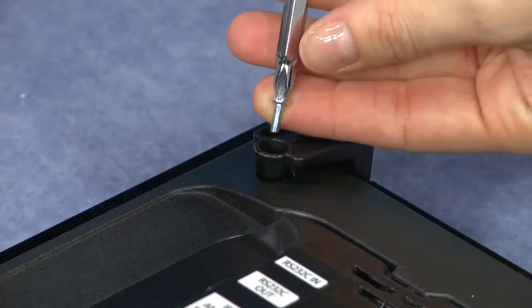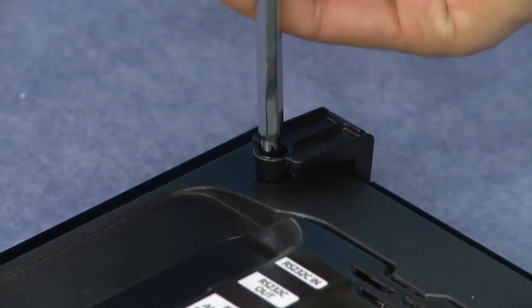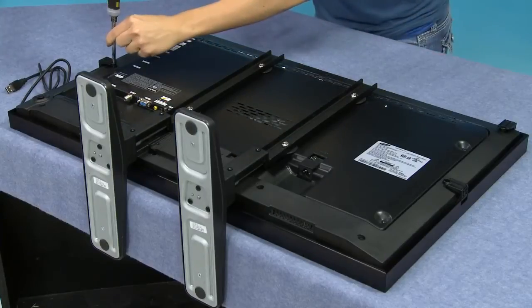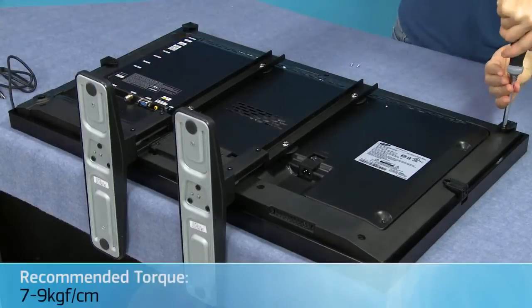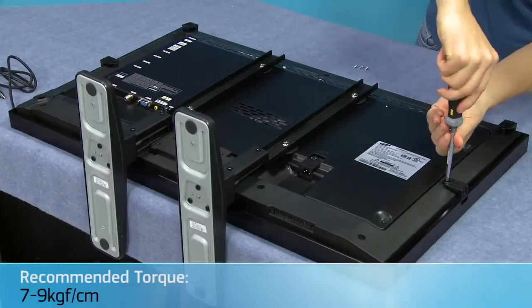Then, use the four provided screws and secure the tabs to the display. Be careful not to use excessive force. The recommended screw torque is 7 to 9 kilograms of force per centimeter.